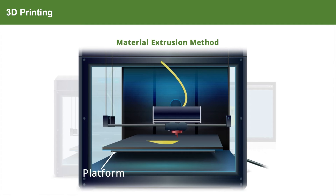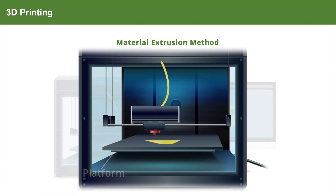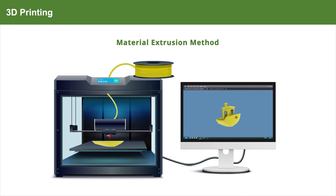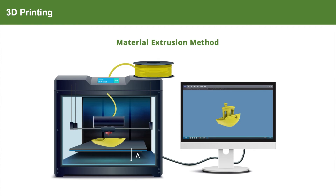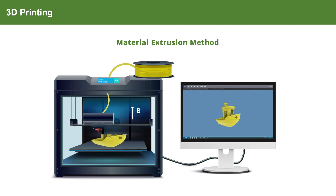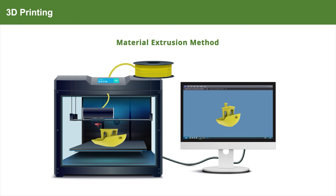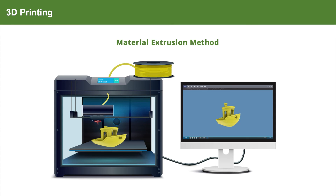After the first layer is formed, the next layer can be formed using either of two methods: the platform can be lowered by the required distance, or the extruder — the filament and nozzle — can be lifted upwards. In either way, the object is made in a layer-by-layer method.